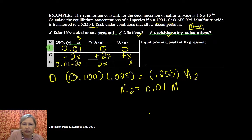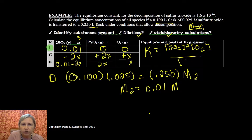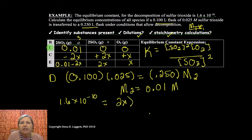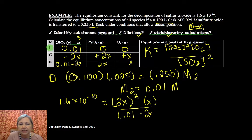Well K is equal to SO2 squared times O2, products over reactants. We only include gases and aqueous, and we're given K. So I have 1.6 times 10 to the minus 10th equals 2X squared. The most common thing you're going to forget to do is you're going to forget to square that 2, so be really careful, times X over 0.01 minus 2X squared.